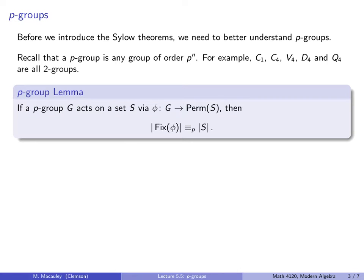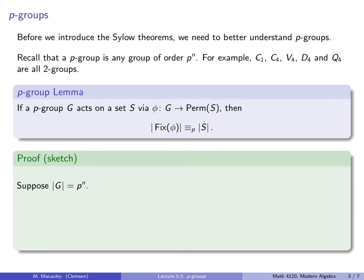Here's something I'm going to call the p-group lemma. If a p-group G acts on a set S via an action phi, then the number of fixed points of the action is congruent to the order of the set modulo p. This is very similar to something we saw in the previous lecture. There we said if a group of order p acts on a set then this holds, but now we're saying if a group of prime power order acts on a set, the same thing still holds. The proof is almost the same.